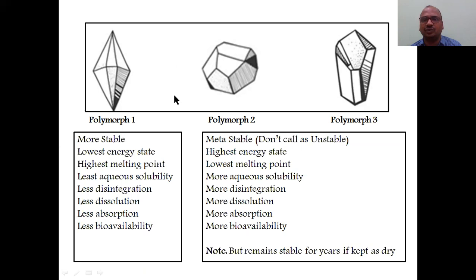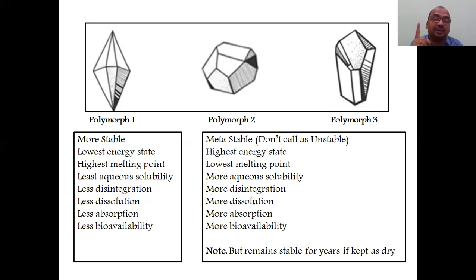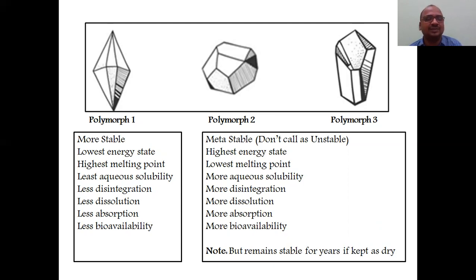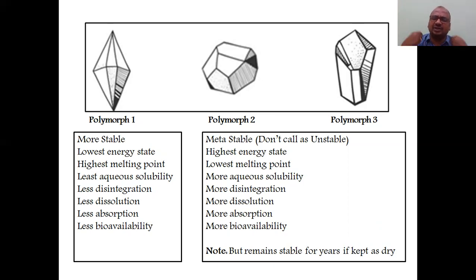Among all crystalline forms in polymorphism, one form is always more stable than the others. The others are called metastable — not unstable. The stable form is the lowest energy state, has the highest melting point, least aqueous solubility, less disintegration, less dissolution, less absorption, and less bioavailability. The metastable form has highest energy state, lowest melting point, more aqueous solubility, more disintegration, more dissolution, and more absorption.